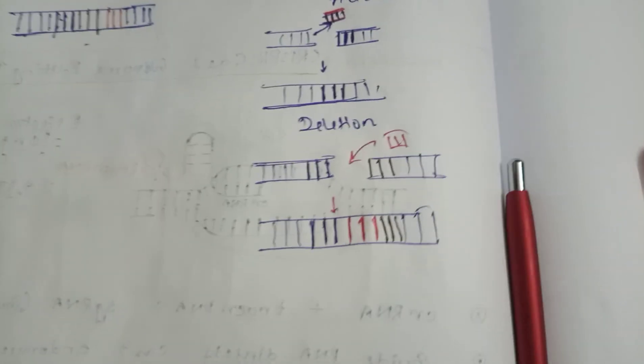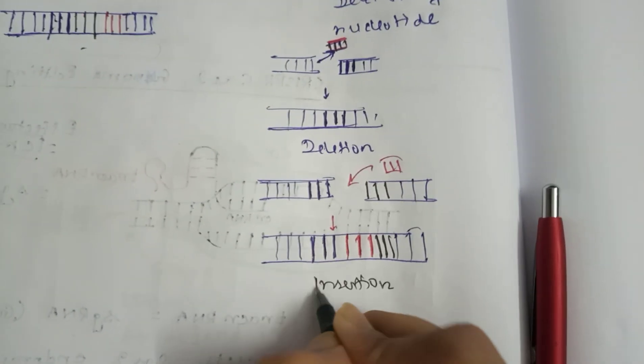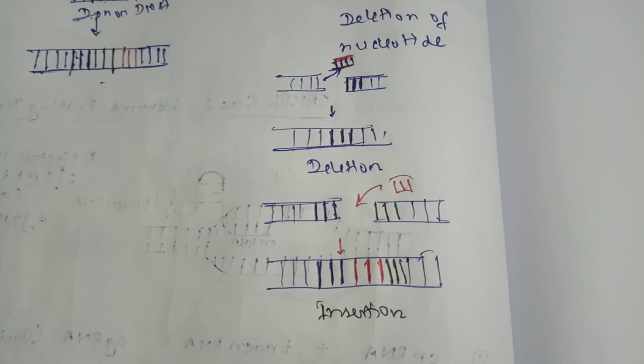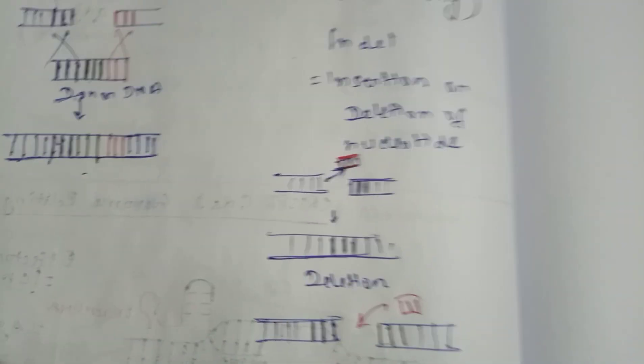These are base pairs actually. I am just drawing it by drawing some lines, but these are base pairs. This can be called insertion or both you can call as indel. Here you can see the size is getting longer and here is lesser because something is deleted here.